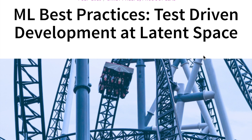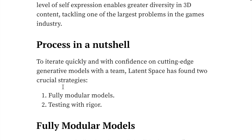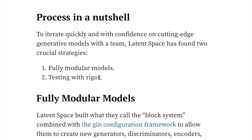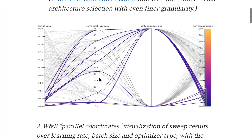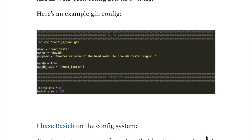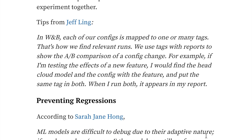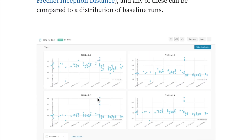Weights and Biases published an interesting article about how their system is used for test-driven development in building the first 3D engine for AI-rendered scenes from latent space. They discuss structuring workflows with fully modular models, testing with rigor, and using the Weights & Biases system to explore hyperparameters like learning rate, batch size, and optimizer. They monitor metrics like the Fréchet Inception Distance (FID) and use statistical significance testing to distinguish real improvements from noise.